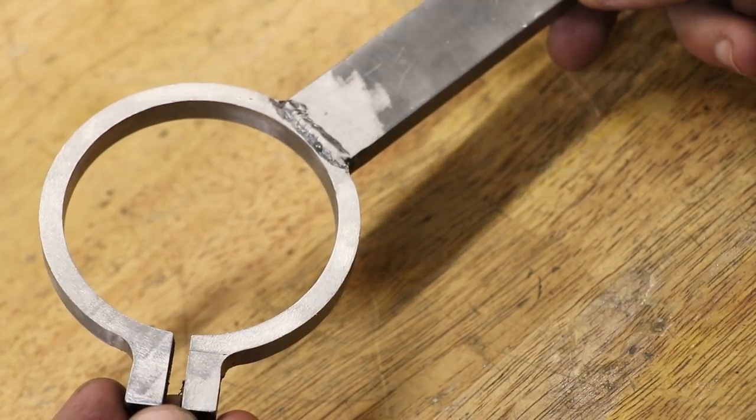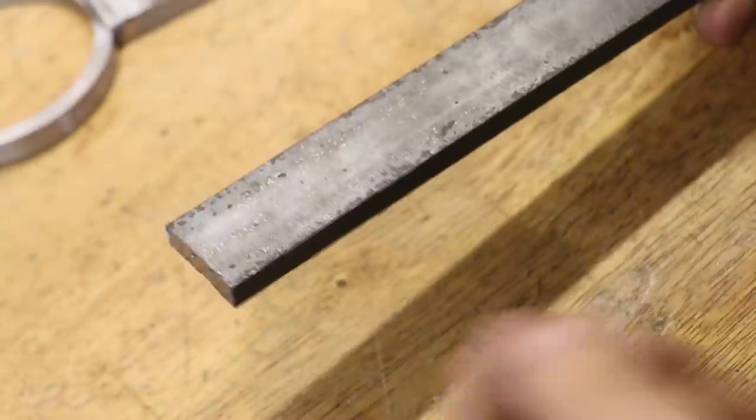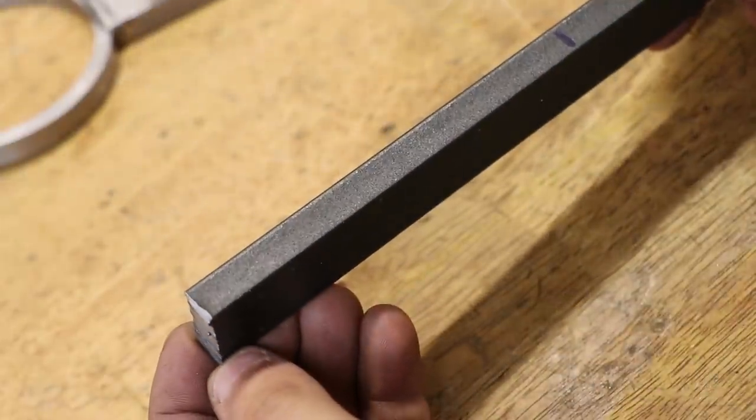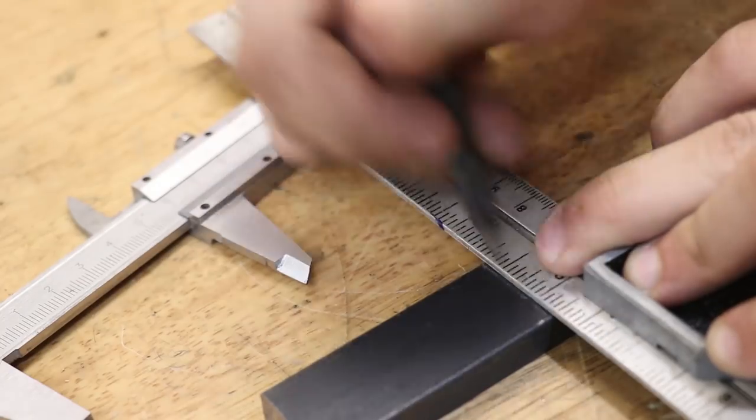And that's the ring done for the moment. The next thing to make is the depth stop bracket. I'll be making it from the same 10 by 25 steel that I used before.